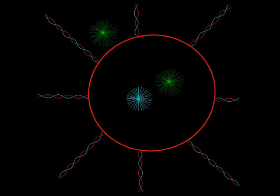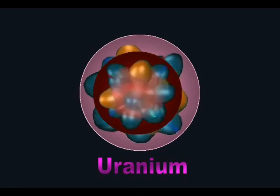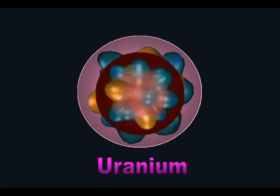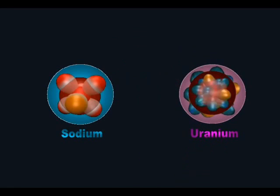Similarly, uranium is radioactive and unstable because it has 92 protons and 146 neutrons, 238 nucleides compressed into a volume no larger than sodium, which only has 23.